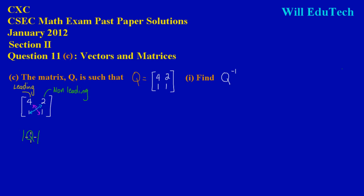So we're saying the determinant of Q, and we are simply taking the product of the leading diagonals. So I'm just going to multiply the 4 by the 1, so 4 times 1, and I'm going to subtract the product of the non-leading. So I'm simply multiplying 2 times 1.